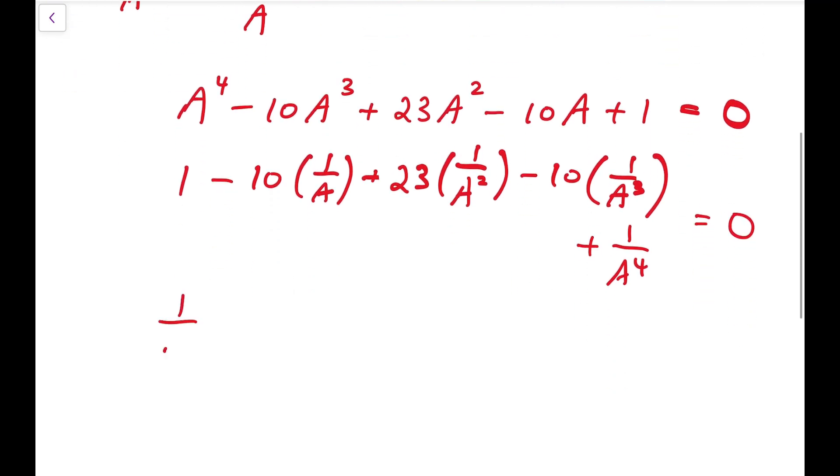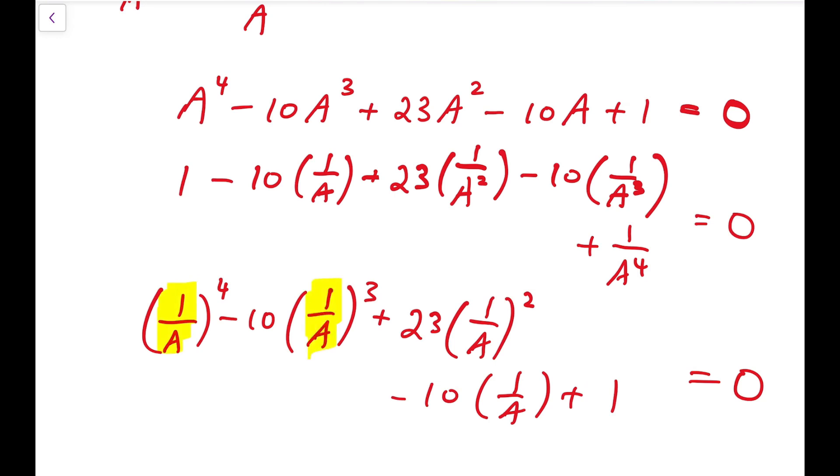So from this, we can say that 1 over a to the 4 minus 10 times the same thing cubed plus 23 times the same thing squared minus 10 times the same thing plus 1 equals 0. So that means this 1 over a is also a solution.